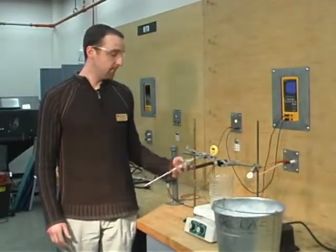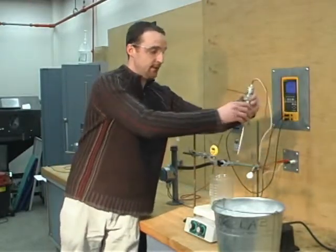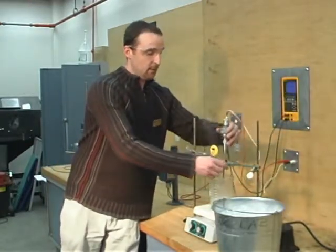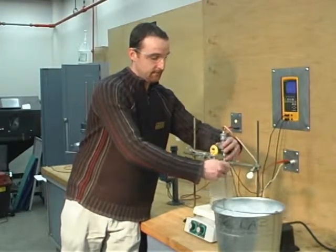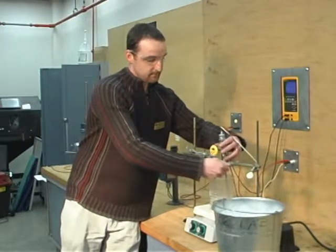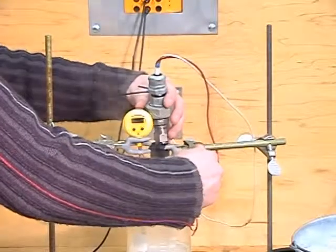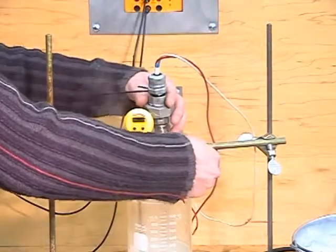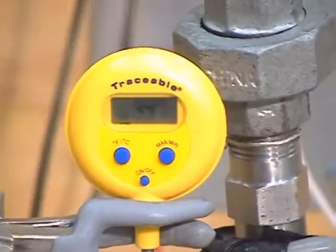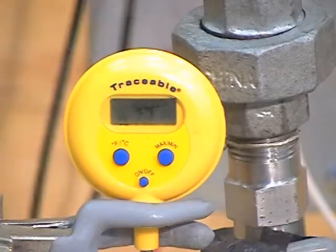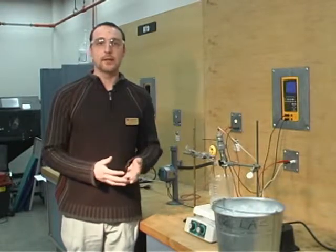Now for the first portion of our lab, we are going to insert the J-type thermocouple into our retort stand and directly into the water. We are going to take our milliamp reading, which from 0 to 100 degrees Celsius will be interpolated between 4 and 20 milliamps. 0 degrees Celsius being our 4 milliamps, and 100 degrees Celsius being our 20 milliamps.